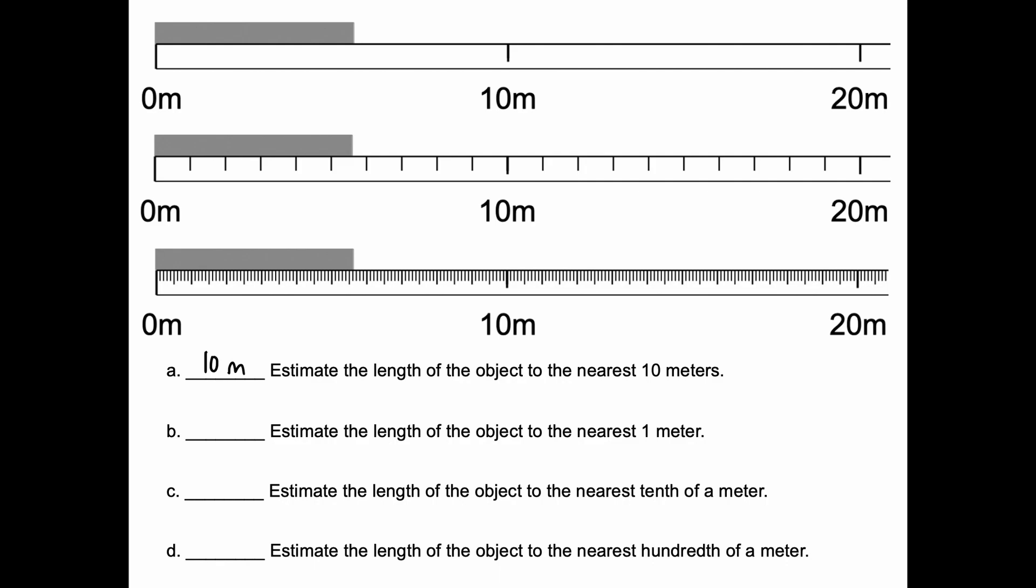For B, we want to estimate it a little more precisely. Estimate it to the nearest one meter. I'm going to use the middle ruler for that. And we have the numbers four, five, six, and seven here. And I believe it's closer to six than five. So, that's going to be my answer.